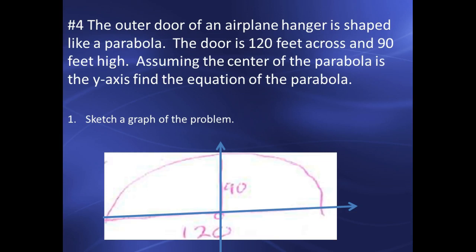I am skipping the question on completing the square. If you have issues with that, please see your teacher. Otherwise, I'm going directly to a word problem. A lot of you had trouble on the word problem. You do need to draw a sketch of the word problem. In this case, we have the door of an airplane hanger that is shaped like a parabola. It's 120 feet across on the floor and 90 feet high.